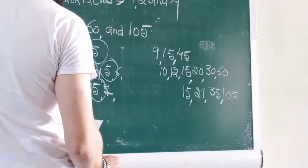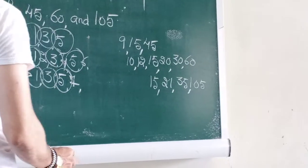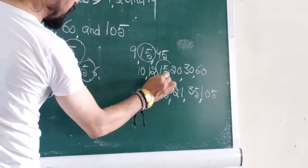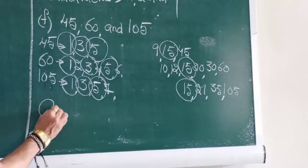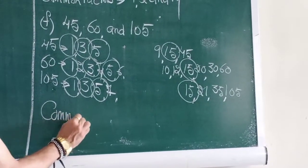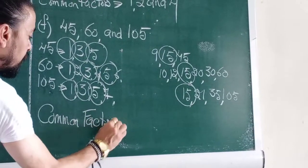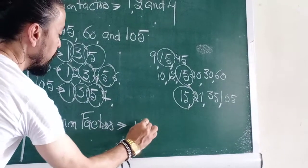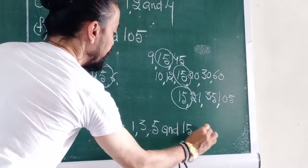Is there any more? Is there any more? Yes. 15, 15, 15, 15. So, the common factors out here are common factors, arrow, 1, 3, 5, and 15.